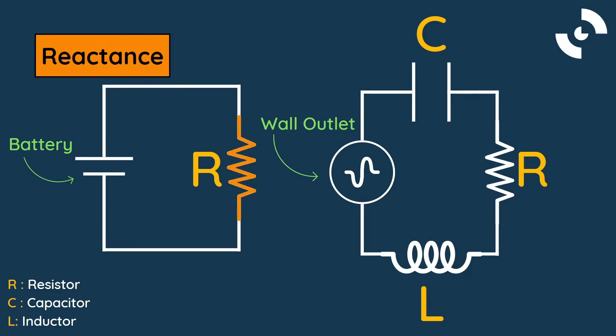In a DC circuit, we know that a resistor will limit the flow of current. In AC circuits, capacitors and inductors will also inhibit the flow of current. We call the effect from these elements reactance.